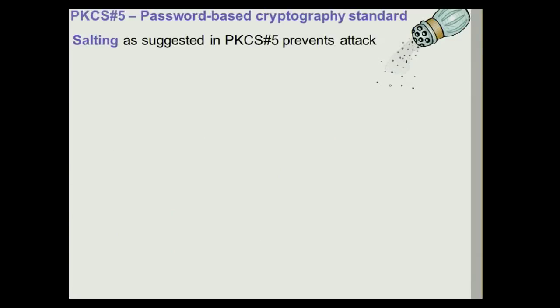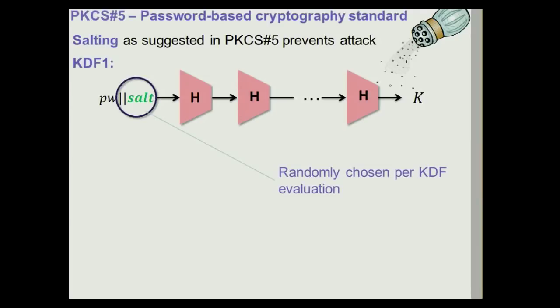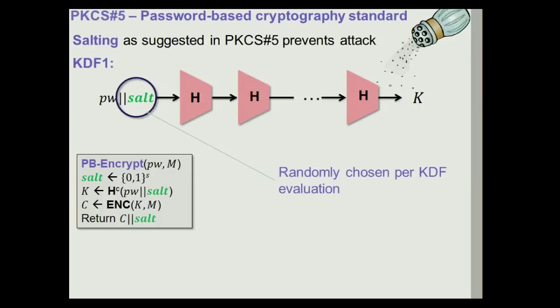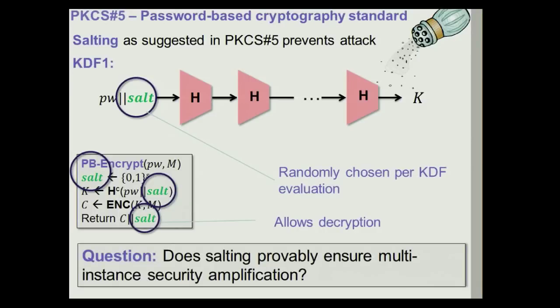So a new design goal that we would like to hold for our KDFs is what we call multi-instance security amplification. We would like to design KDFs with the property that the amount of work to break multiple instances increases linearly in the number of instances. Now, interestingly, if you look at the actual proposals in standards, in particular in PKCS 5, to how to design KDFs, you're going to see that they all use a technique which is known as salting, which indeed happens to prevent the attack I just mentioned. In particular, the most common key derivation function is called KDF1 here. It's going to use iteration as before, but before iterating the password, it's going to first compute a fresh random value for each KDF computation, which we call the salt, and then append it to the password and then apply the iteration.